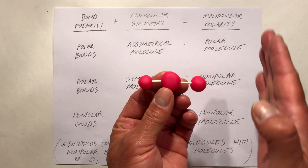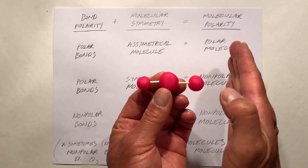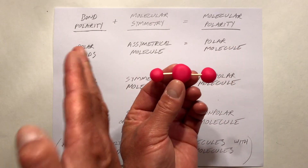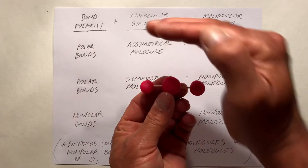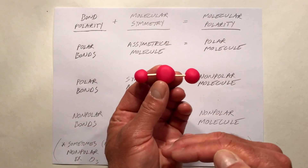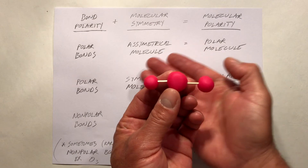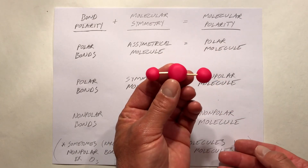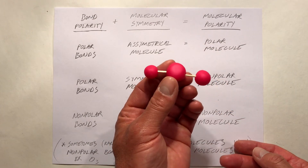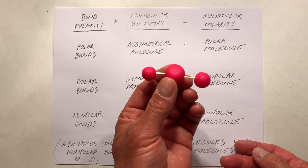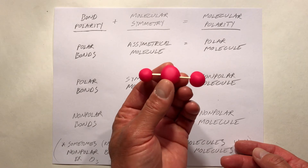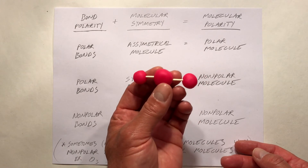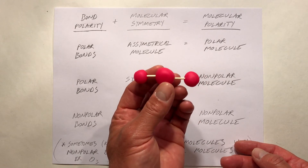But we can't say that one side would be more positive than the other, or the top more positive than the bottom, or the back more positive than the front. Because of the balanced structure, even if it has polar bonds, it would be a non-polar molecule.